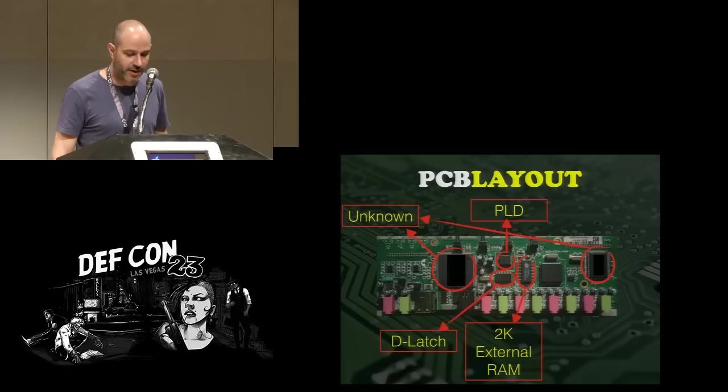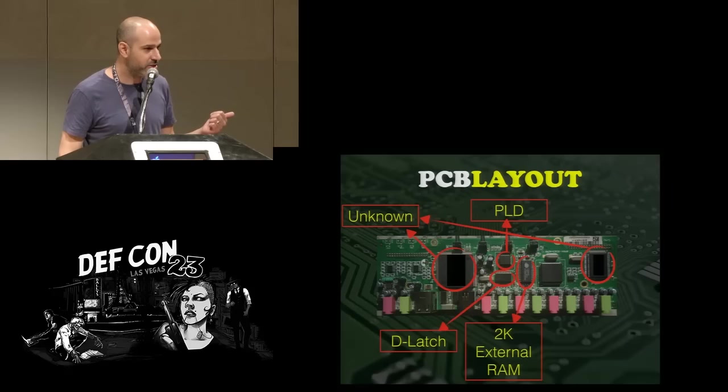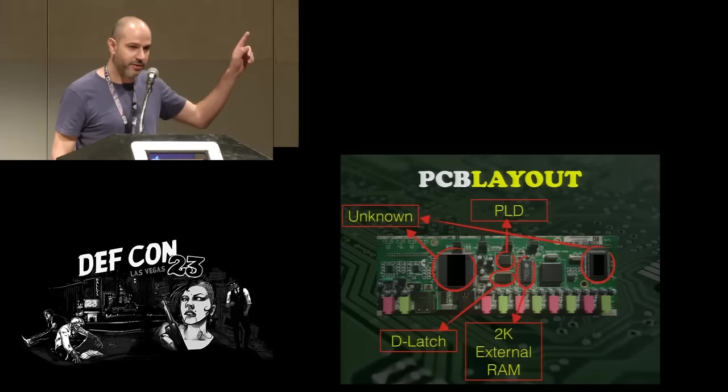We kept on going and found something we actually know: memory. It's a 2K external RAM — we know what it does. It's also connected to something called a D-latch, which I remember from university days but at this point have no idea what it does. And we were left with one more chip, which actually turned out to be the most interesting chip of all.